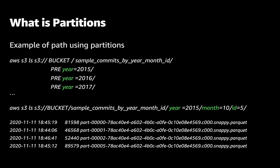For example, we can define the root folder for our table as bucketName plus path. In my case, the path is sample-commits by year, month, and ID. After that, you can define year as a partition, for example, or we can go deeper and define month and ID, or any other partition that you need for your use case.